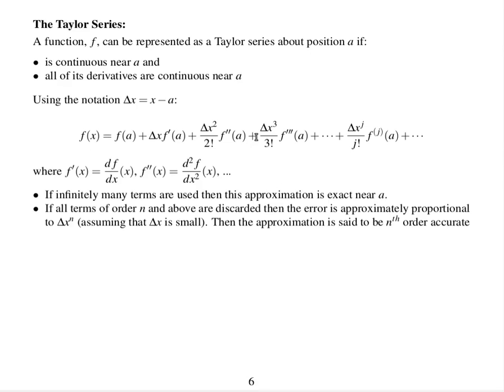So for example, if this term is discarded, and all the rest of the terms are discarded, this term is much bigger than all the other terms, because delta x cubed is much bigger than delta x to the 4 and delta x to the 5, and so on, because delta x is so small. So this whole error is approximately proportional to delta x cubed.